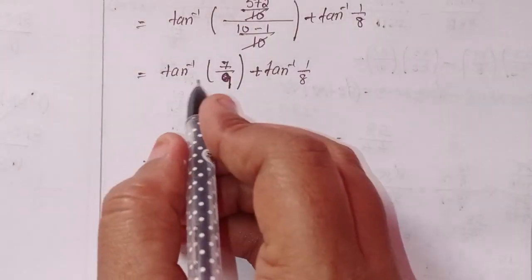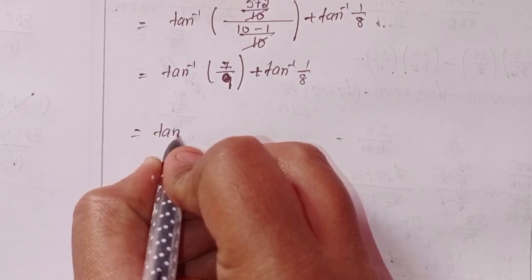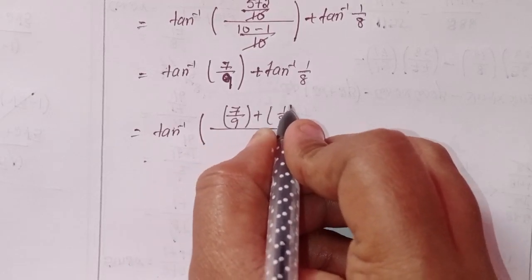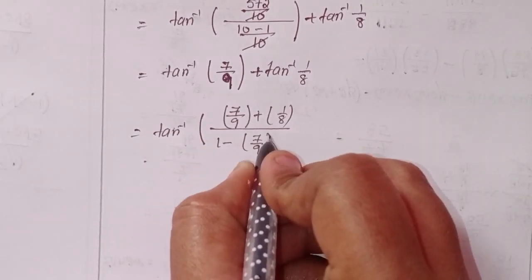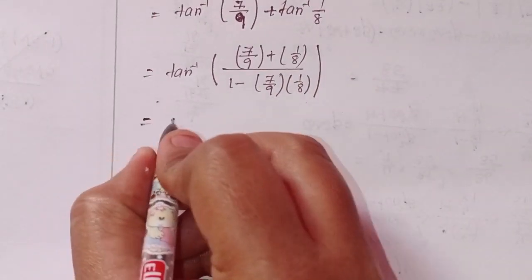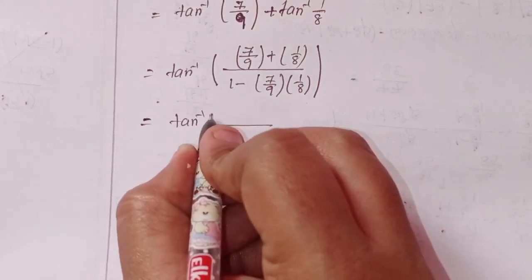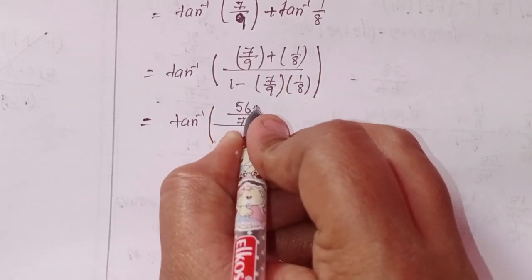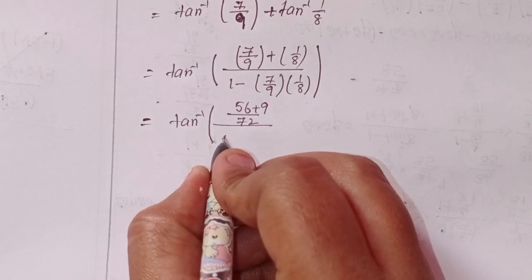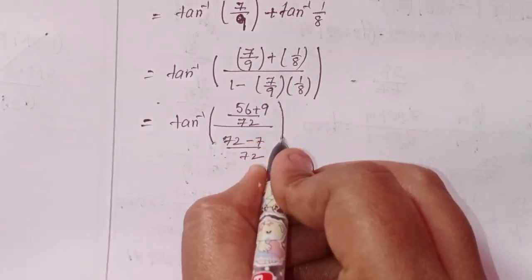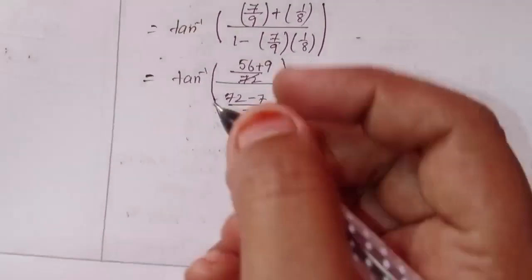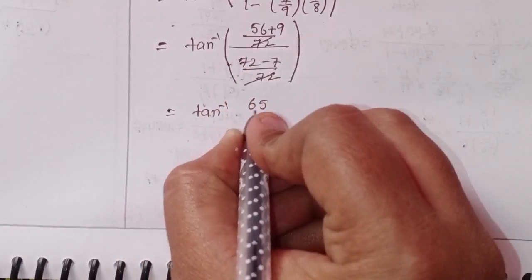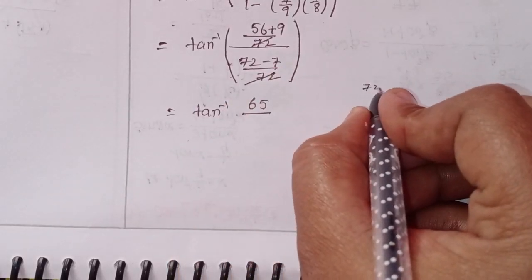Again apply formula: tan inverse x plus tan inverse y equals tan inverse of x plus y by 1 minus x into y. LCM is 72. Cross multiplication: 56 plus 9 in the numerator. Here also 72 minus 7 by 72 in the denominator. The 72s cancel.